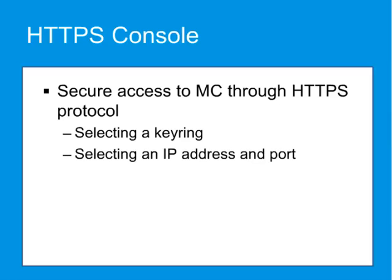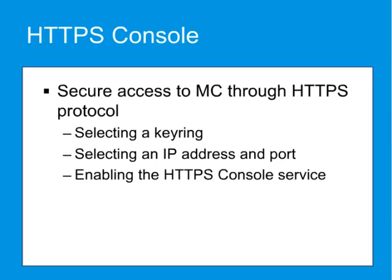Selecting an IP address and port on the system that the service will use, including virtual IP addresses. You can use any IPv4 or IPv6 address on the ProxySG for the HTTPS console service, including virtual IP addresses. And enabling the HTTPS console service.